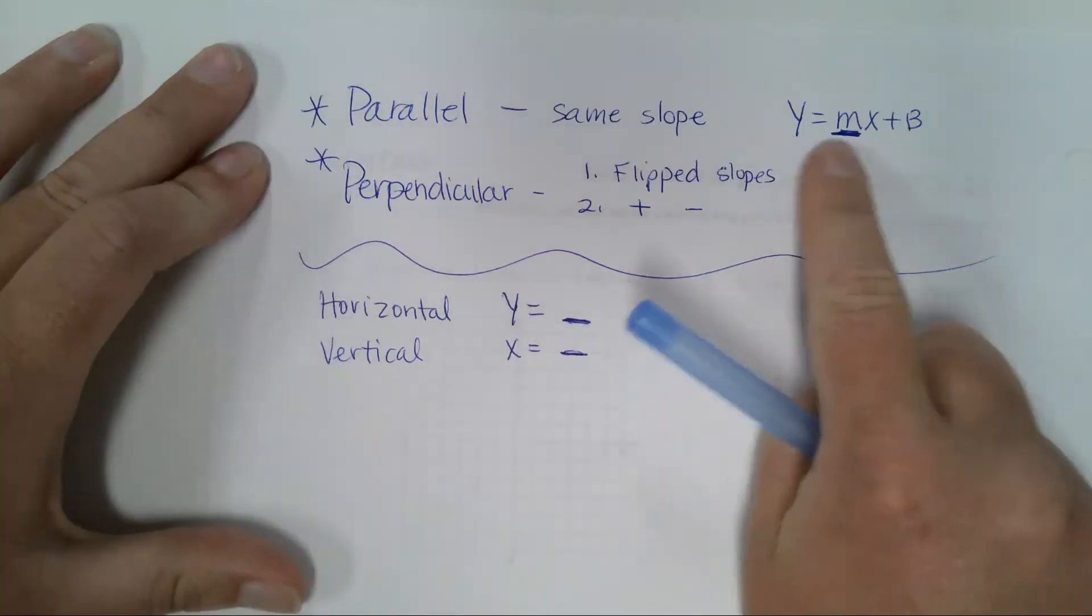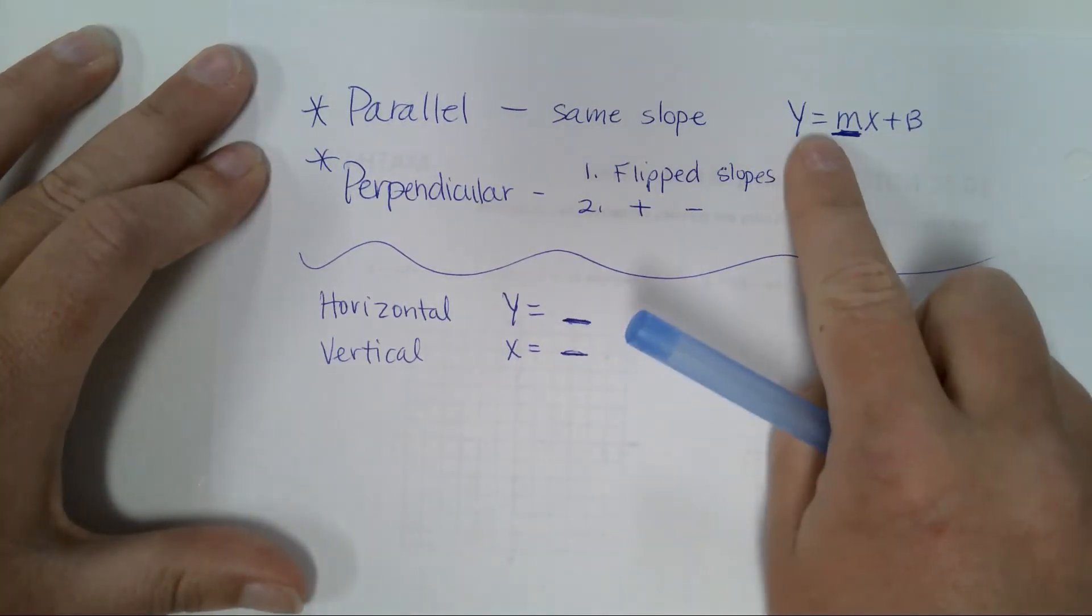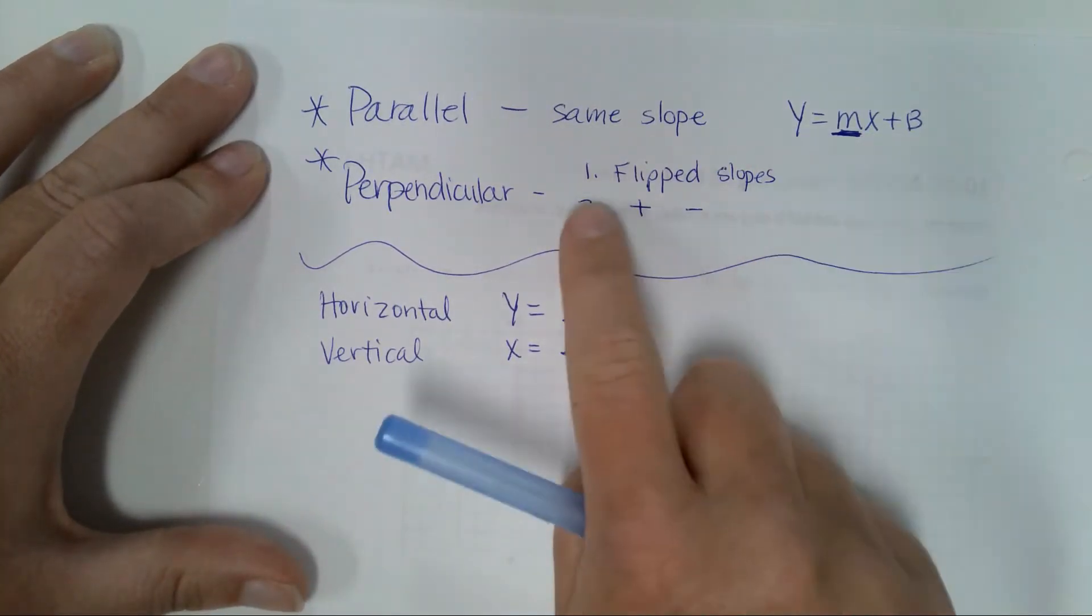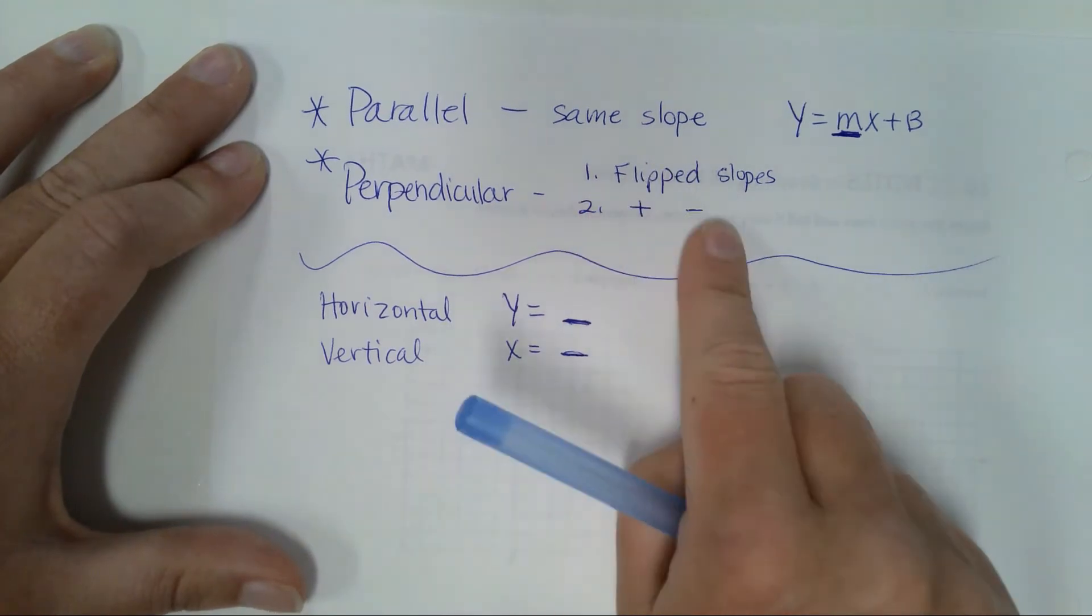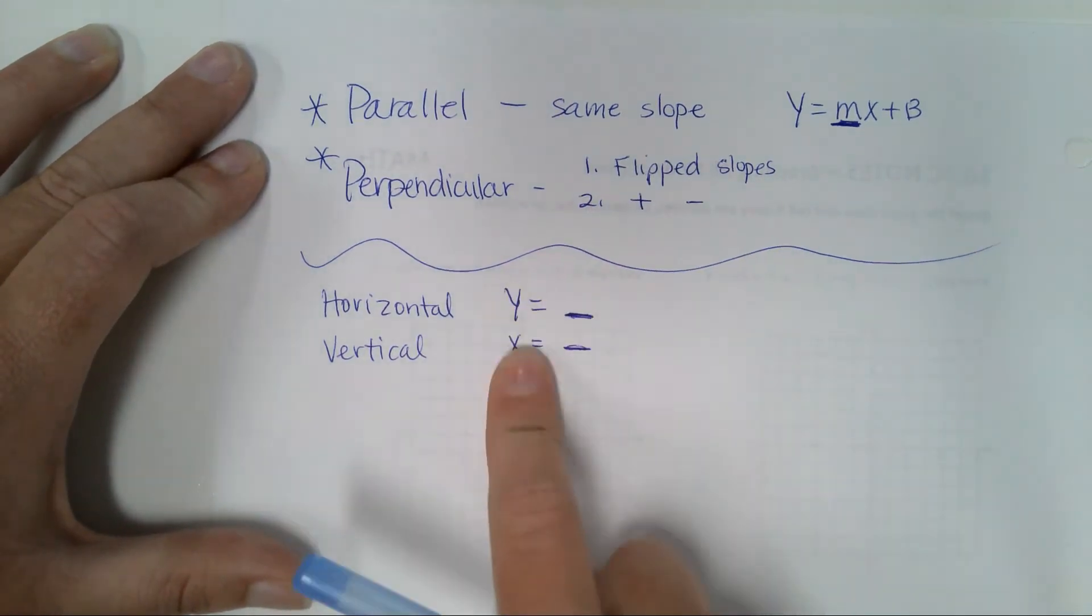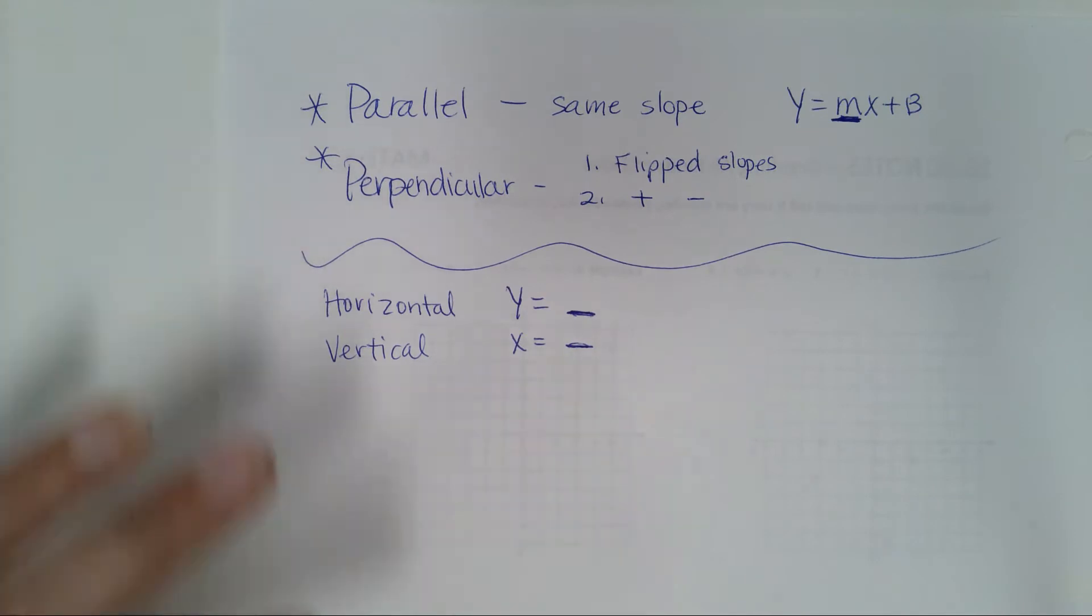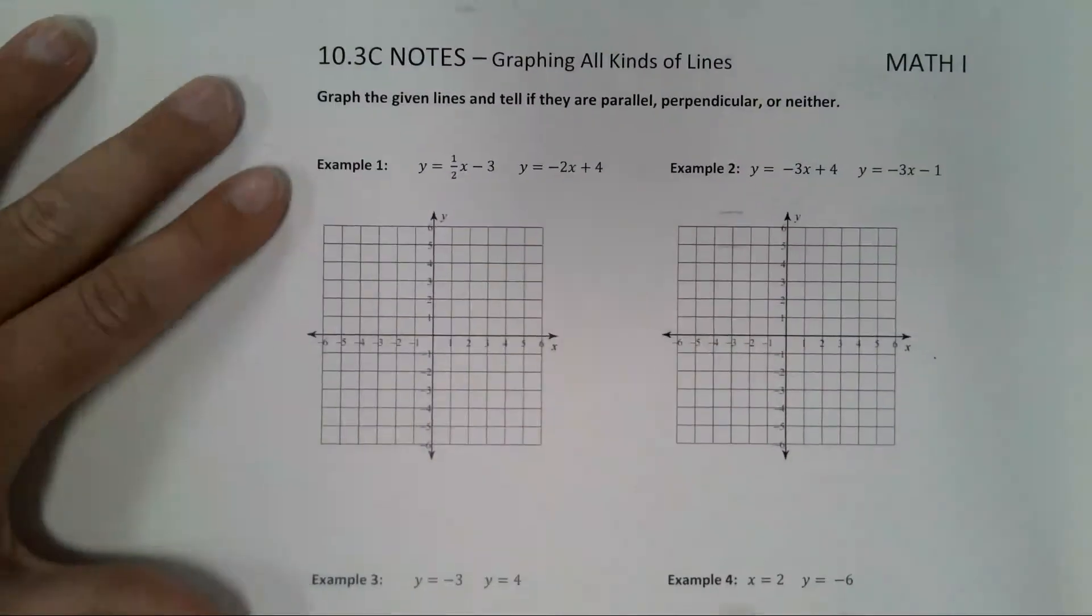When the lines look like this, parallel ones have the same slope or perpendicular ones flipped and positive and negative. When they look like this, one's horizontal, one's vertical. So this is our cheat sheet. This is on the back of our notes. So let's go back to the front side and let's get to graphing.